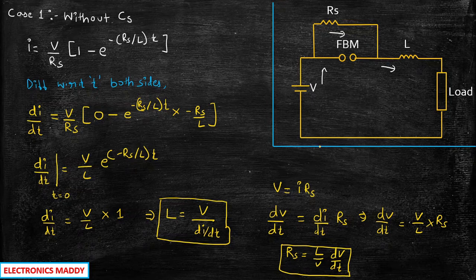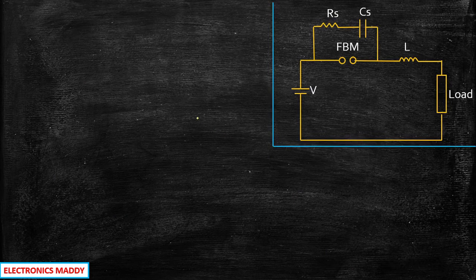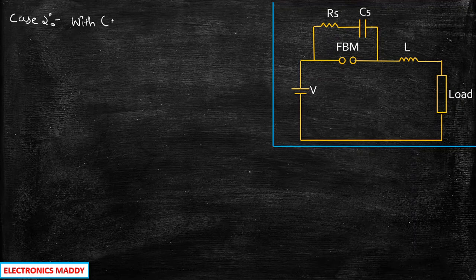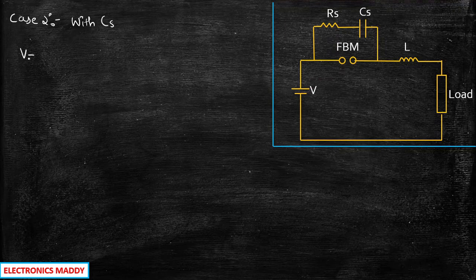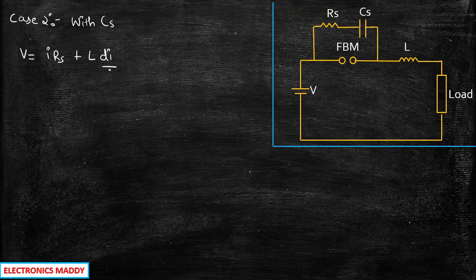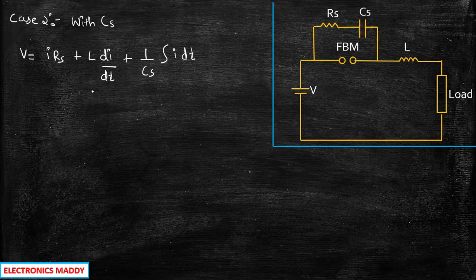We still need to find the expression for C, so we consider Case 2 — with capacitor CS. When we include the capacitance, we write the expression of Kirchhoff's Voltage Law: V = I × RS + L × (dI/dt) + (1/CS) × ∫I dt. This is the basic formula when R, C, and L are connected in series — applying KVL yields this equation.